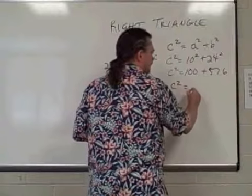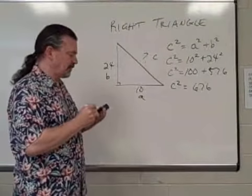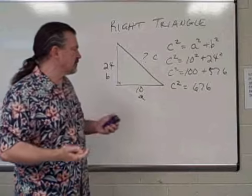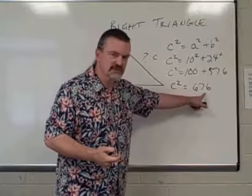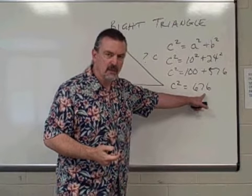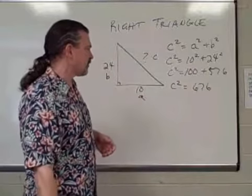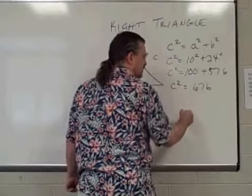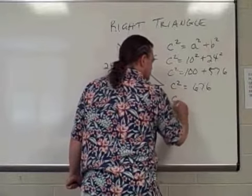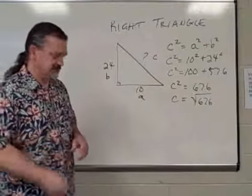So C squared is equal to 676. And remember, whenever we are looking for what number can we square that produces some value, we can always figure out what that number is by taking the square root of this value. So in this case, C squared equals 676, so C can be found by taking the square root of 676.